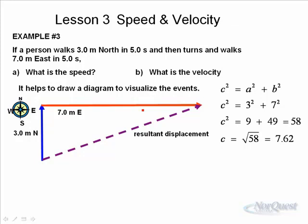Nine plus forty-nine is fifty-eight. So c squared is fifty-eight. c is the square root of fifty-eight or approximately seven point six two meters.